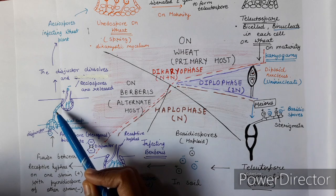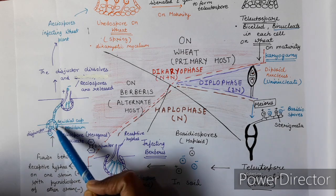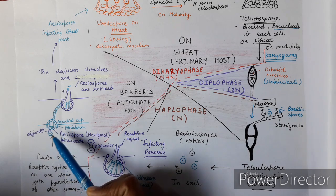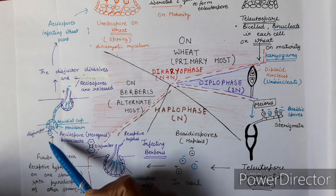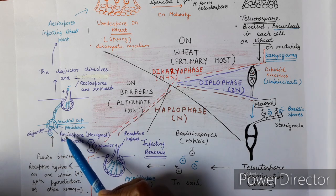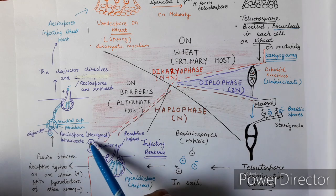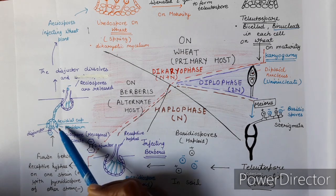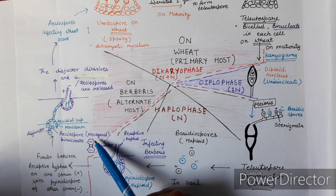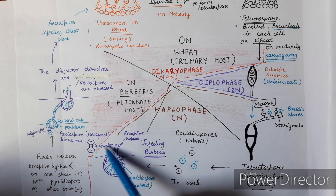The fusion between a receptive hyphae of one strain and a pycnidiospore of the opposite strain gives rise to a dikaryotic mycelium. This dikaryotic mycelium aggregates on the lower surface of the leaf to form a structure called the aecial cup. The aecial cup gives rise to hexagonal cells called aeciospores, which are hexagonal binucleate structures arranged in chains, joined by a single cell called the disjunctor.